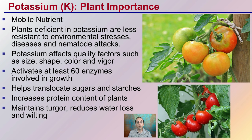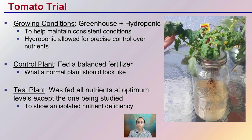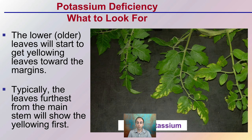Most notably, for the marketable fruit, yellow shouldering is one issue that can occur, and that affects whether customers will pick up and purchase your product. To demonstrate a deficiency, I chose to grow tomato plants in a hydroponic setup in a greenhouse, which allowed for precise control. You're also going to see a comparison of a control plant that had the optimum rates of all nutrients and a test plant that was potassium deficient.